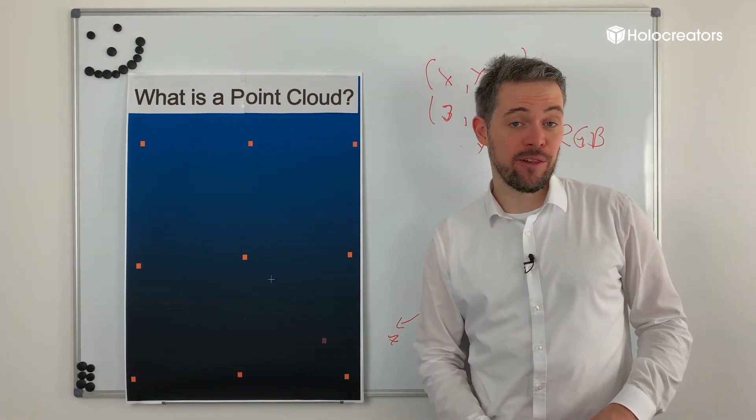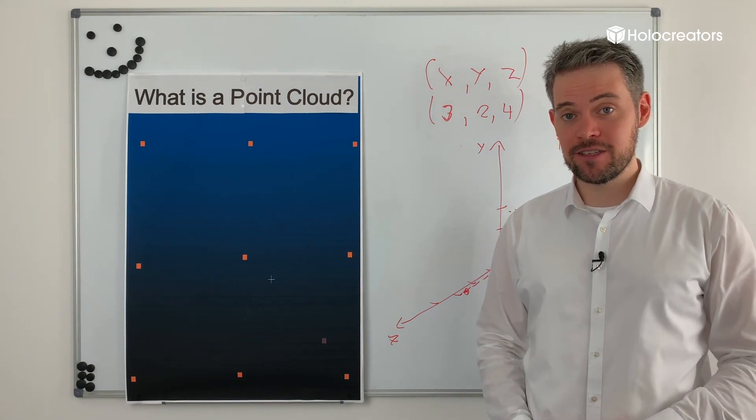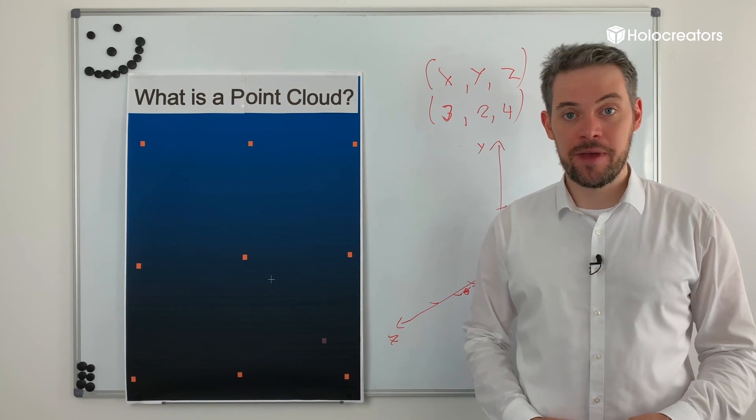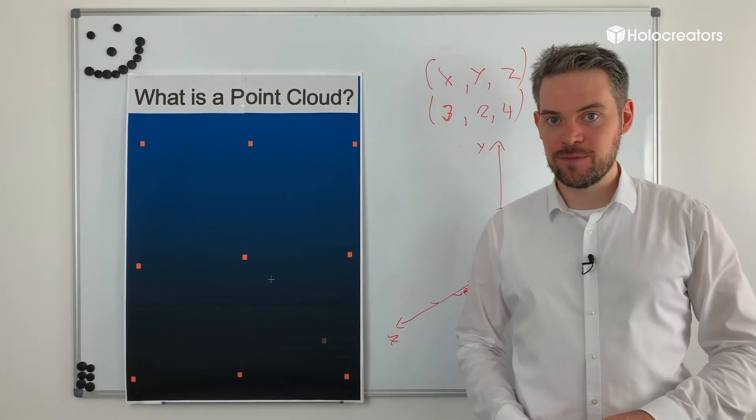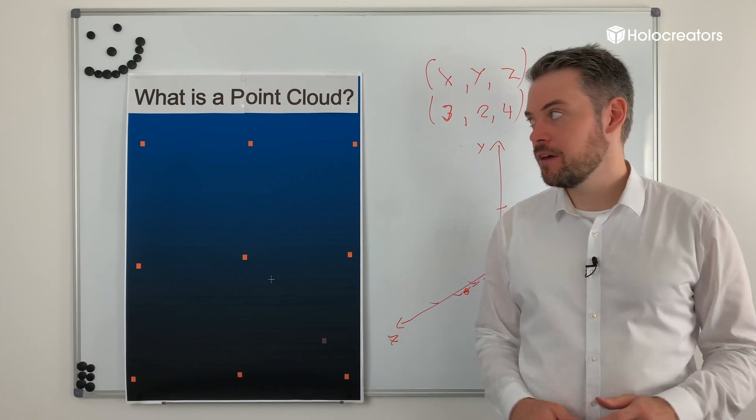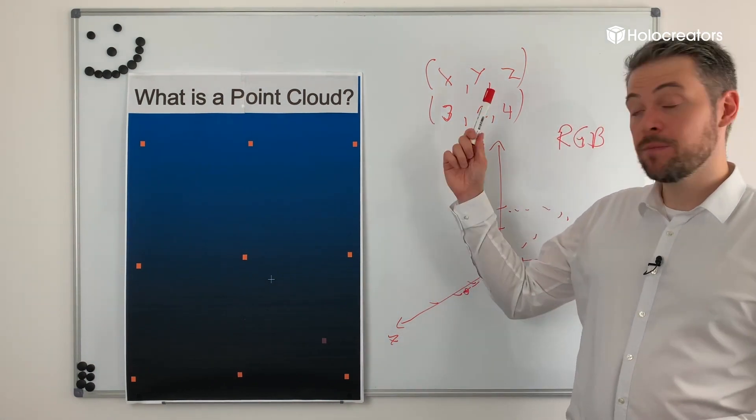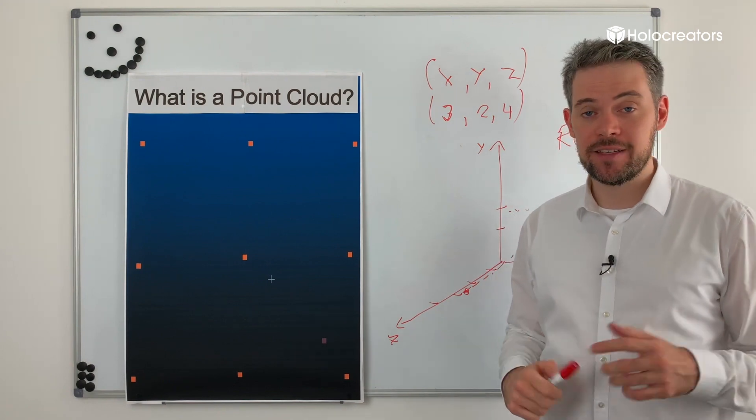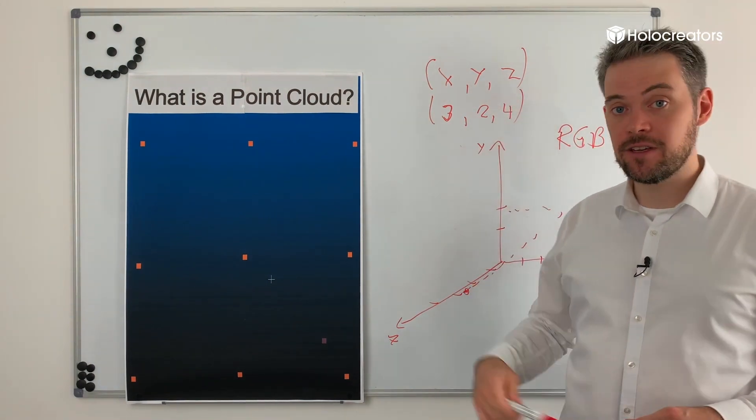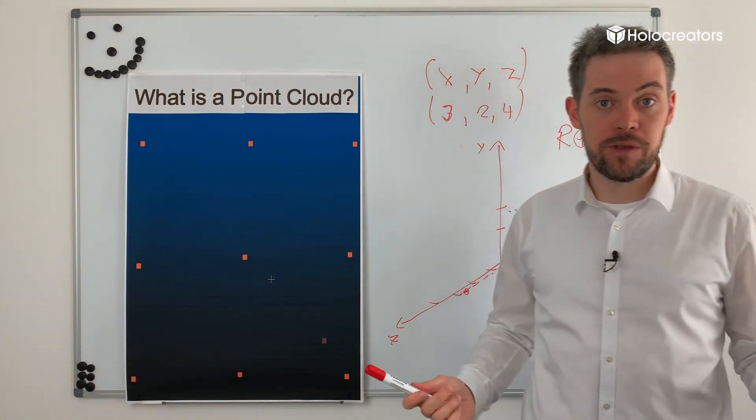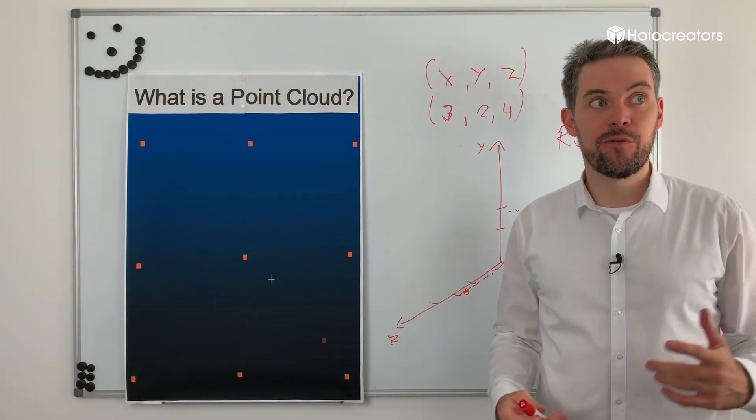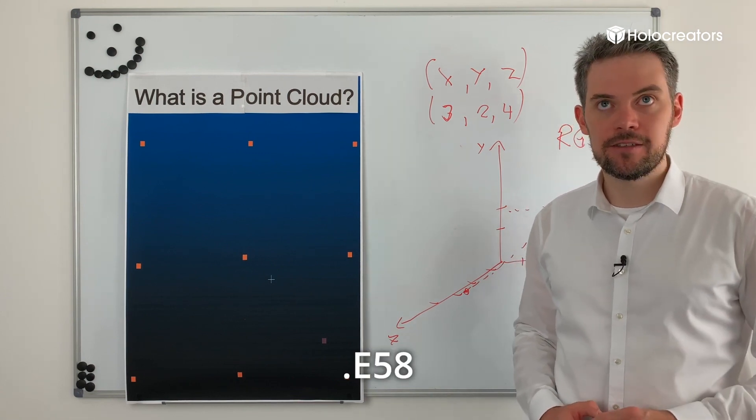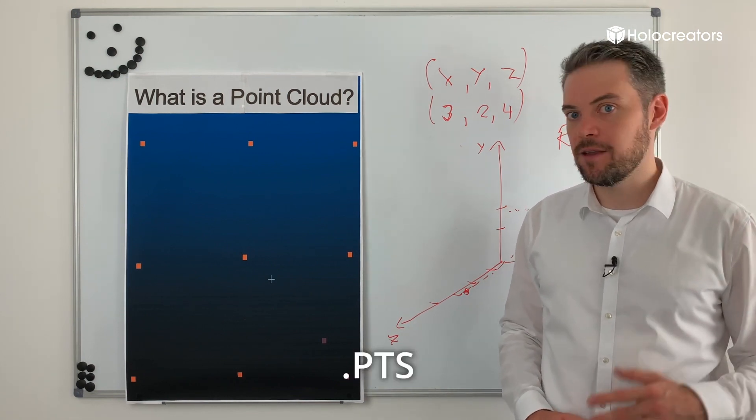What are common file formats for point clouds? Again, there are many. This is because every 3D scanner manufacturer kind of comes up with their own format. Some are more known than others. The simplest one is probably XYZ. That's just a text format where you have the XYZ values and then you have a long list. So, that would be the simplest form. Other formats are PLY, LAS, E58, PTS, and many, many more.